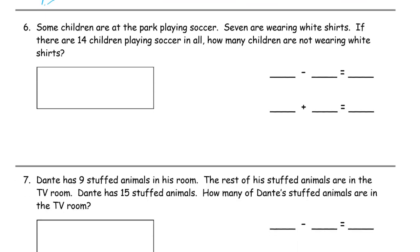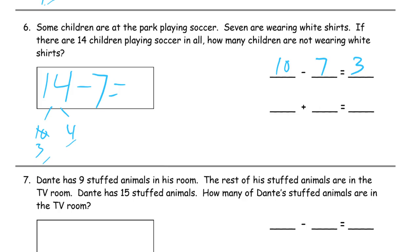Some children are at the park playing soccer. Seven are wearing white shirts. If there are fourteen children playing soccer in all, how many children are not wearing white shirts? Fourteen is ten and four. Subtract seven from the ten — there will be three left. Ten minus seven equals three. And then three plus four — add the leftover parts back together to see how many there are all together that are left. Seven are not wearing white shirts.